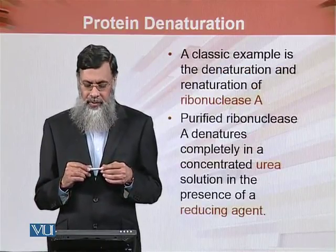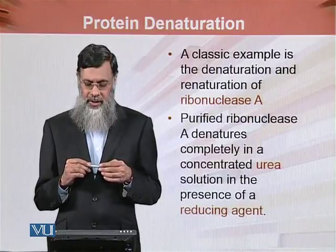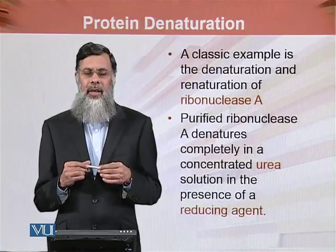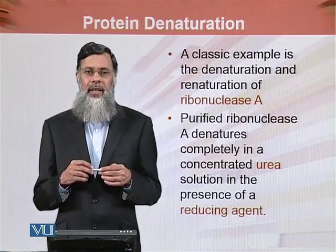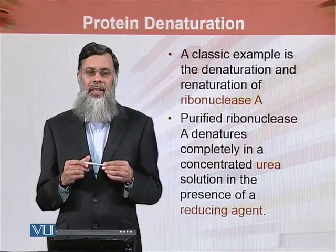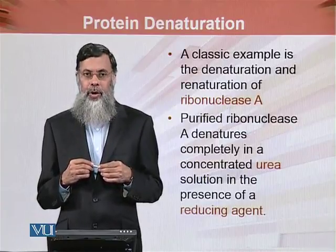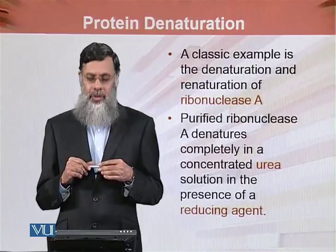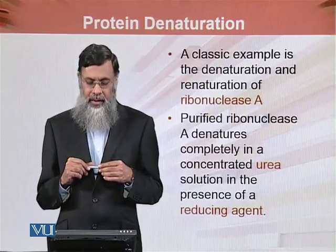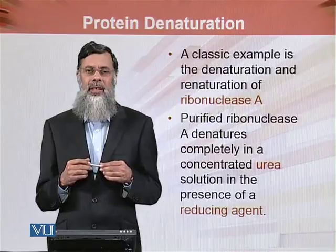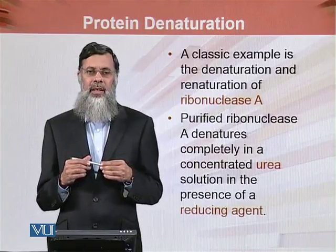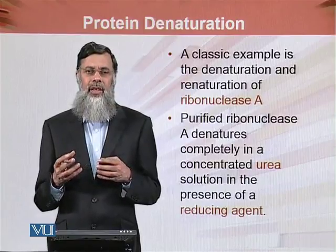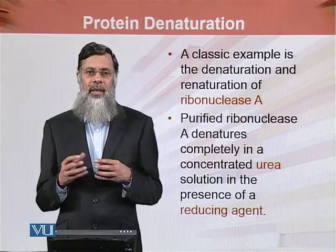A classic example of denaturation and renaturation is the ribonuclease A enzyme. Ribonuclease A is an enzyme and serves as the classical example for studying renaturation and denaturation. Purified ribonuclease A denatures completely in a concentrated solution of urea in the presence of a reducing agent, which disrupts its secondary and tertiary structure, causing it to denature.